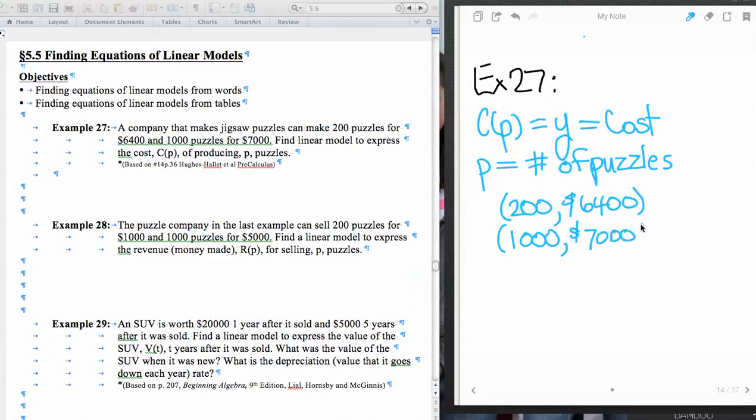So now what we see is we have two ordered pairs. Just like in previous sections, we're going to find the slope by subtracting the y's. So 7,000 minus 6,400, and then divide that by 1,000 minus the 200. So making sure that our ordered pairs line up. Here we have 200, 6,400 and 1,000, 7,000. And so 7,000 minus 6,400, that's going to give us 600. And then denominator, 1,000 minus 200 is 800. And so our slope ends up being 3 quarters.